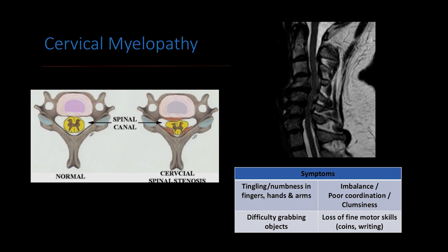The major symptoms of cervical myelopathy are relatively vague because other conditions can cause similar symptoms. These include numbness or tingling in the fingers, hands, and arms — often confused with carpal tunnel syndrome or cubital tunnel — as well as imbalance, poor coordination, clumsiness, dropping objects, difficulty with fine motor skills like buttoning your shirt, picking up coins, or handwriting changes. Some people describe it as feeling drunk all the time.